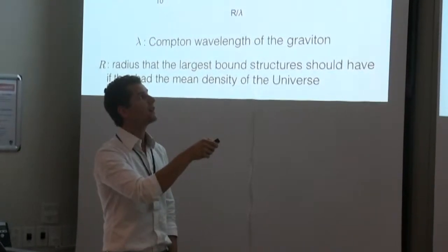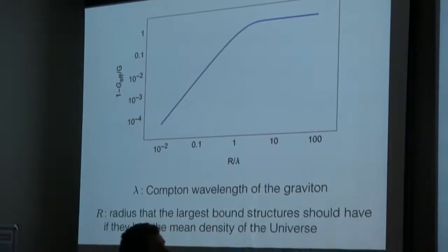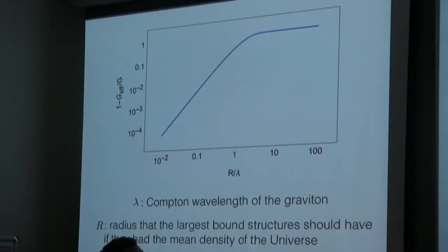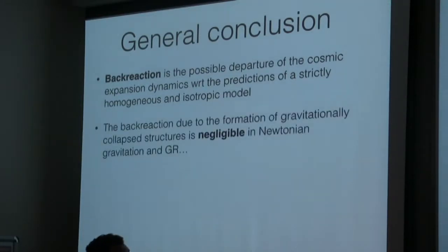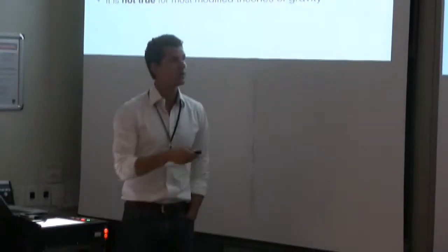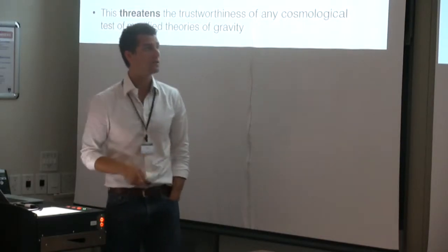As an illustration: if you plot the effective gravitational constant in Yukawa gravity relative to the true gravitational constant as a function of the ratio between cell size and the Compton wavelength, you see that for very small objects the correction is tiny, but corrections of order unity are possible when cells are on the order of or larger than the Compton wavelength. General conclusion: back reaction is the possible departure of the cosmic expansion dynamics from the prediction of an FLRW model. The back reaction due to the formation of gravitationally collapsed structures is negligible in Newtonian gravitation and GR because of Gauss's law. But this is not true for most modified theories of gravity, which in principle threatens the trustworthiness of the cosmological tests of those theories.